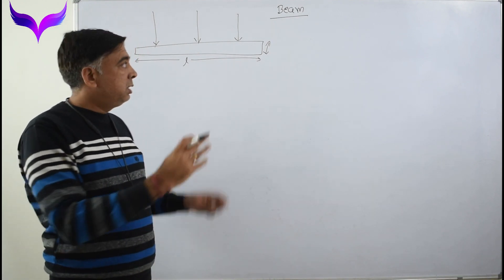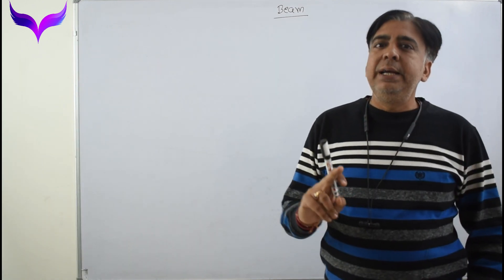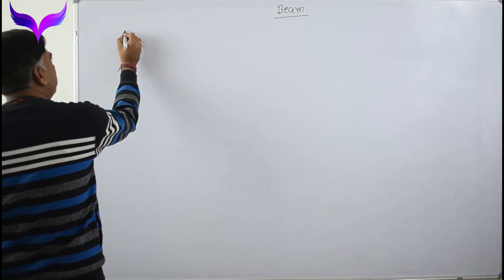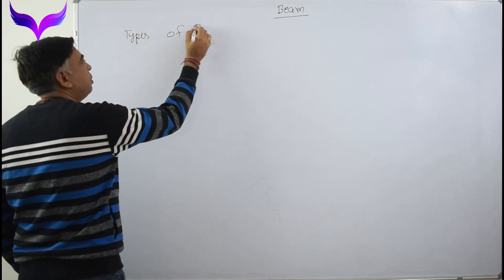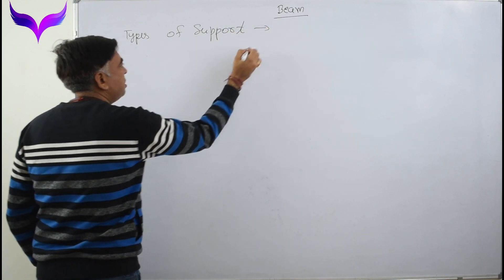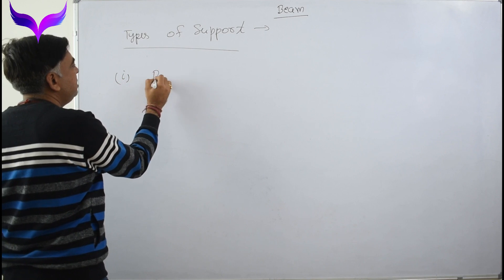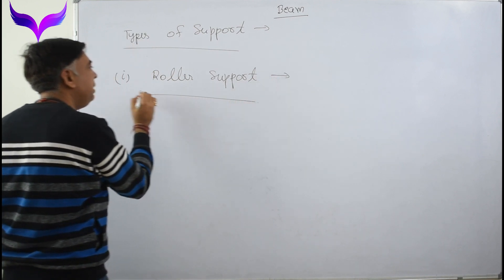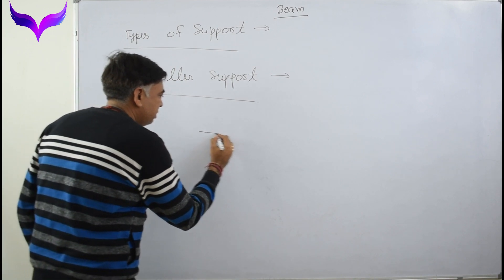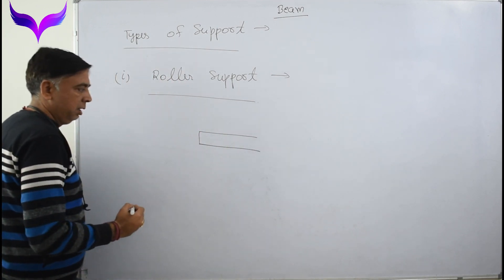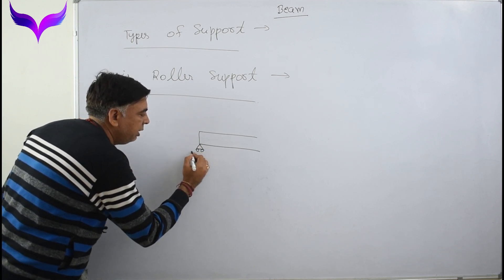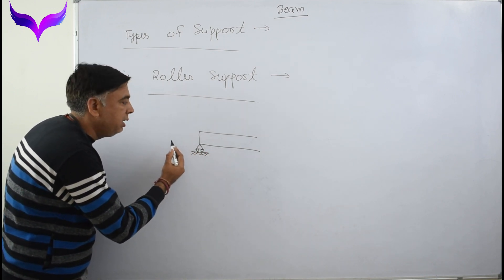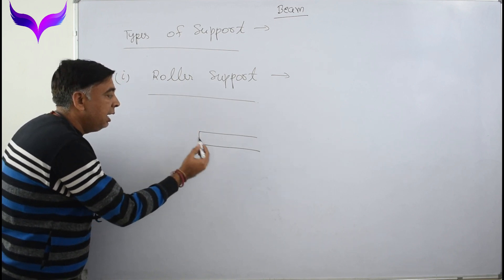This is the proper definition of the beam. Now, before the classification of the beam, we will know which types of supports exist. The first support is called a roller support. At a roller support, this end can move in the horizontal direction only, does not move in the vertical direction, but it can rotate.